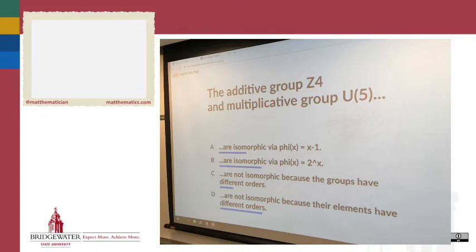Now that you've had a chance to think this over, people agreed that it was answer B, that the function φ(x) = 2^x is an isomorphism between these two groups.